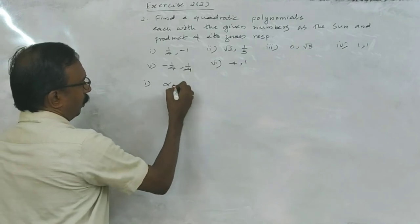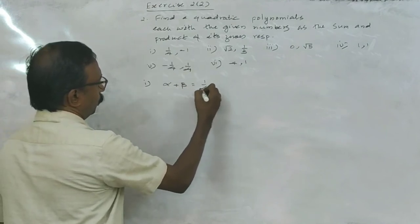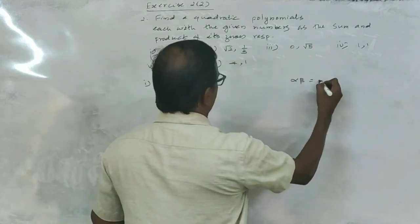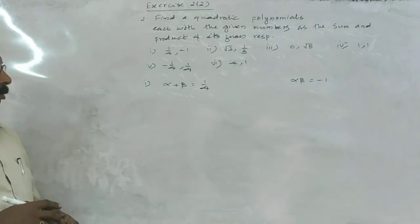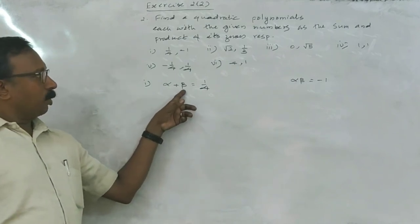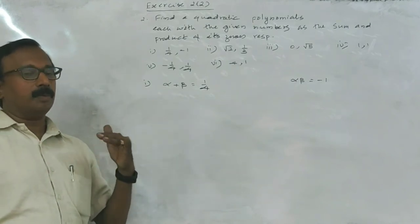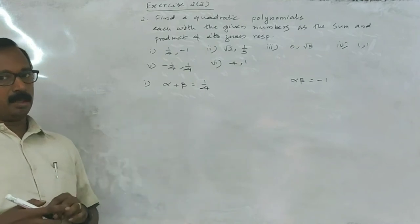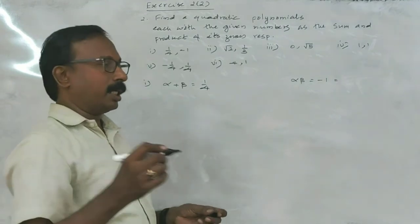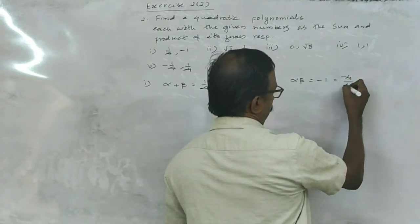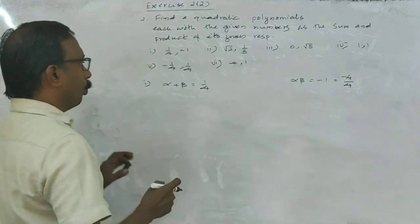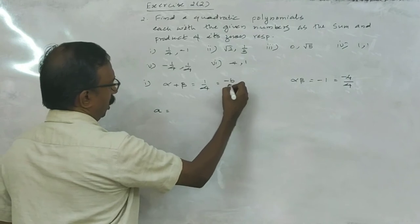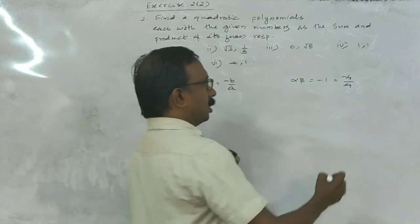In the second exercise of 2.2, we have given the sum and product of some quadratic polynomials and we have to find the polynomial. In the first question, sum alpha plus beta is equal to 1 by 4 and alpha beta is equal to minus 1. To make the denominators same, minus 1 can be calculated as minus 4 by 4. Now we can find A — this is minus B by A and this is C by A, so A is equal to 4, B is minus 1, and C is minus 4.